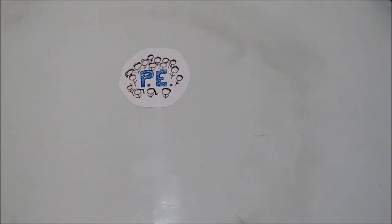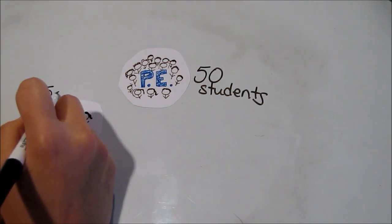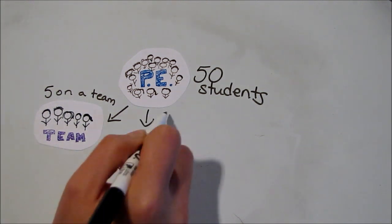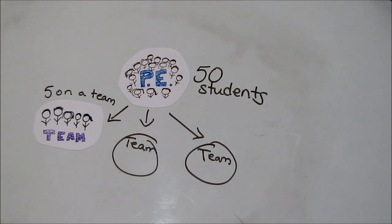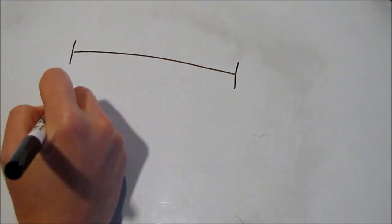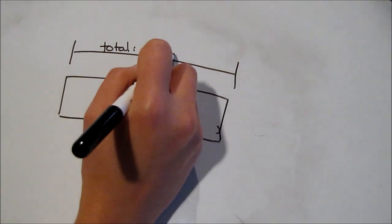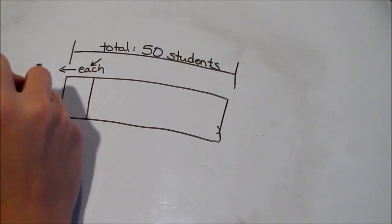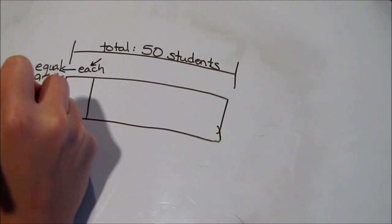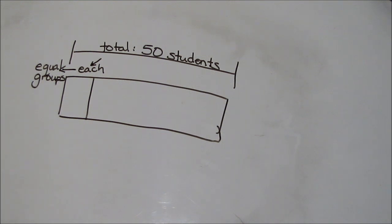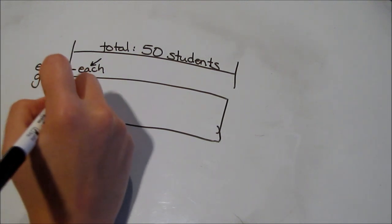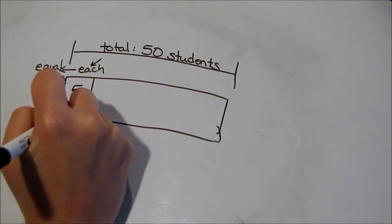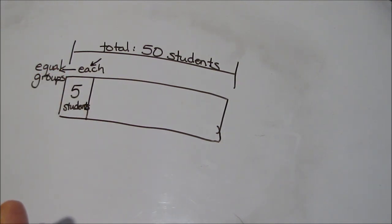We can also separate using a strip diagram. If there are 50 students in PE and they're being put on teams, and each team has five students, we can find out how many groups we can make. We're not looking for a total — our total number of students is 50, there won't be any more. We're answering a question about the groups, so we'll separate the 50. The word 'each' is important because it tells us that our groups will be equal sizes. We don't know how many groups to make, but we do know the size of each group: five students. So we'll start with our total bar, and on a problem like this I often have to redraw the bar to make sure everything is equal at the end.